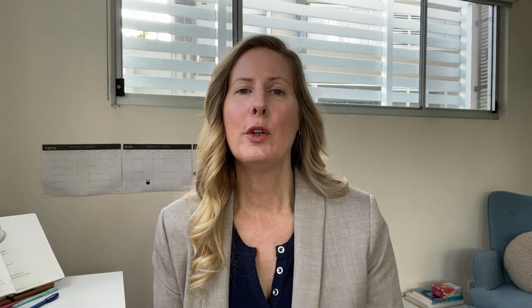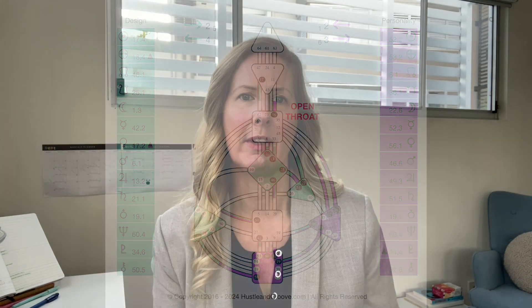So if you have an open throat center and you're not a reflector — for my beautiful reflectors, listen up, yours operates a little bit differently — but if you are any other type, generator or projector — manifesting generators and manifestors always have a defined throat — if you're a generator or projector with an open throat center, then you're really here to speak to people based on where they are at. You're not really here to manifest your own stuff, but to communicate in a way that is what the other person needs in the moment.